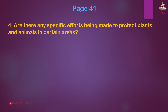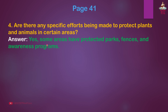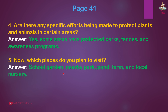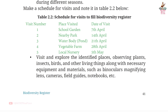Question 4: Are there any specific efforts being made to protect plants and animals in certain areas? Answer: Yes, some areas have protected parks, fences, and awareness programs. Question 5: Now, which places do you plan to visit? Answer: School garden, nearby park, pond, farm, and local nursery.